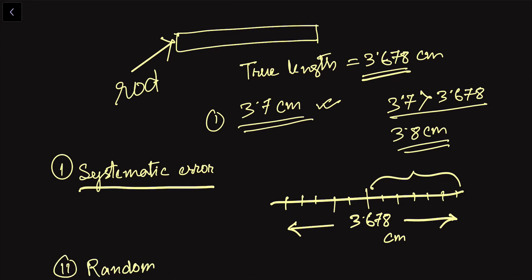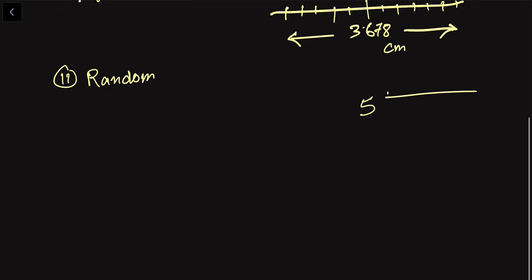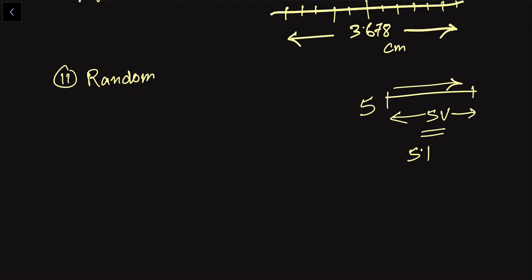Random errors arise due to random or unpredictable fluctuations in experimental conditions. For example, measuring the temperature of a person at different locations gives different readings. Similarly, when measuring current through a conductor, the voltage supply may fluctuate — sometimes becoming 5.1 volts or 4.95 volts due to random processes — causing random errors.